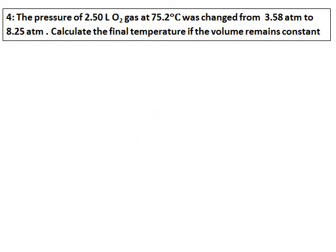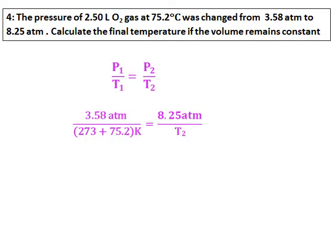Fourth question: 2.50 liters of oxygen gas at 75.2 degrees Celsius has its pressure changed from 3.5 atmospheres to 8.25 atmospheres. Calculate the final temperature if the volume remains constant. The formula to use is P1/T1 = P2/T2. Substitute all values, convert temperature to Kelvin, and calculate T2. The final temperature should be reported in degrees Celsius, so always report temperature in whatever unit the question requests.